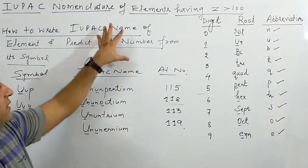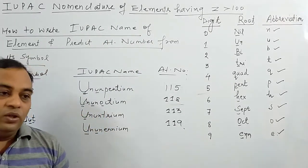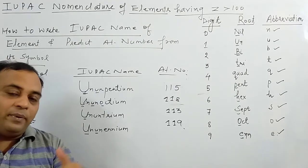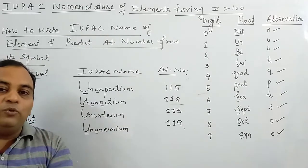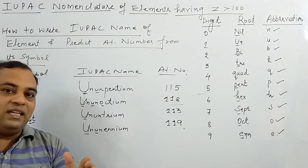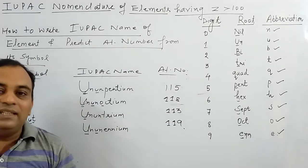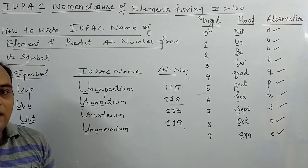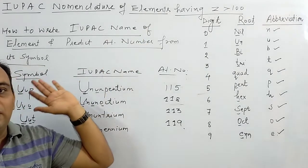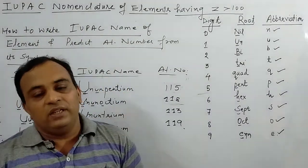Let me briefly explain why this concept was introduced. When elements were being discovered, many scientists worked collectively and discovered common elements. Some scientists named them according to their own preferences, creating disputes where the same element had different names. To avoid such controversies, after atomic number 100, this IUPAC system was established so every discovered element has a standardized name and symbol.